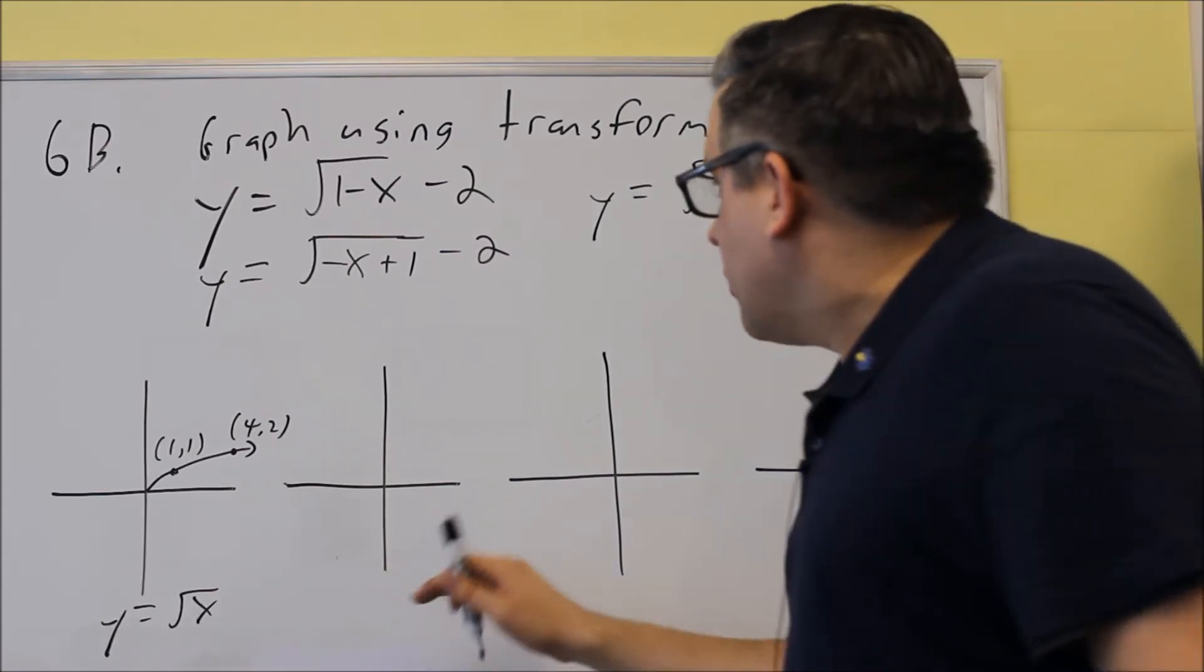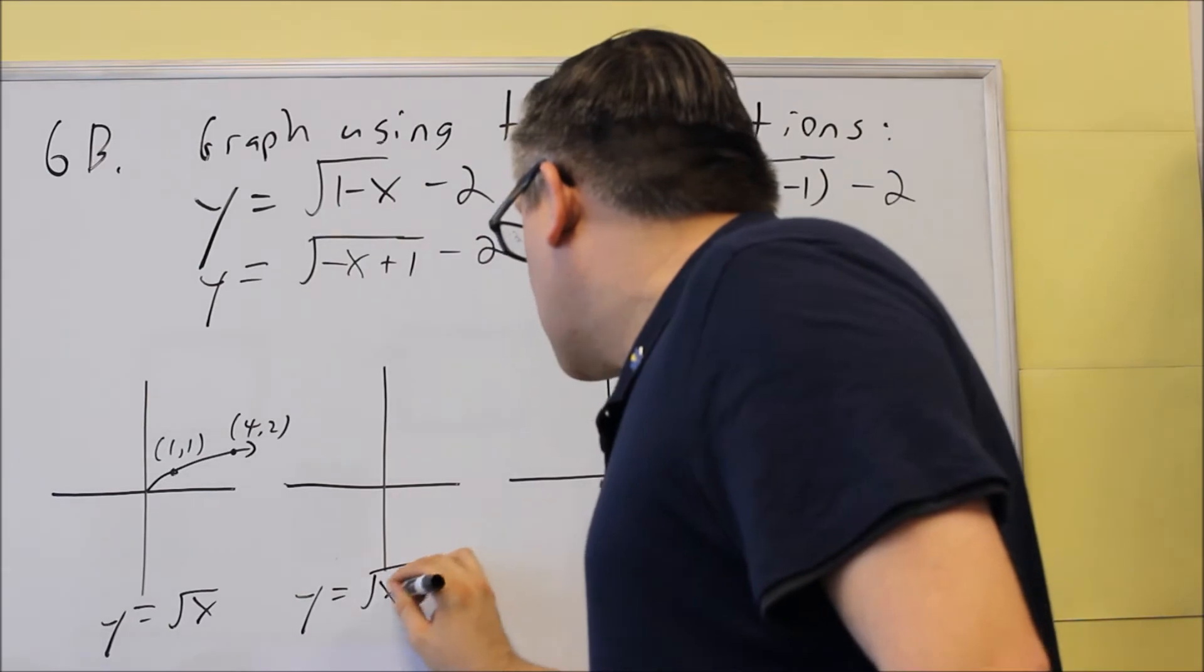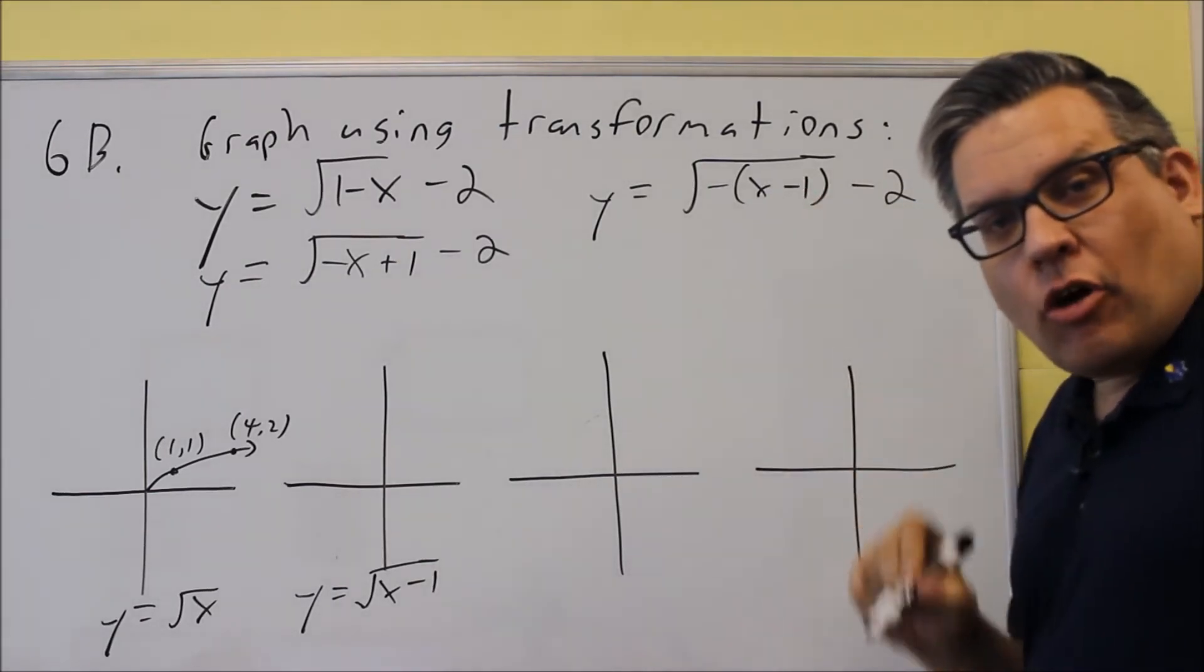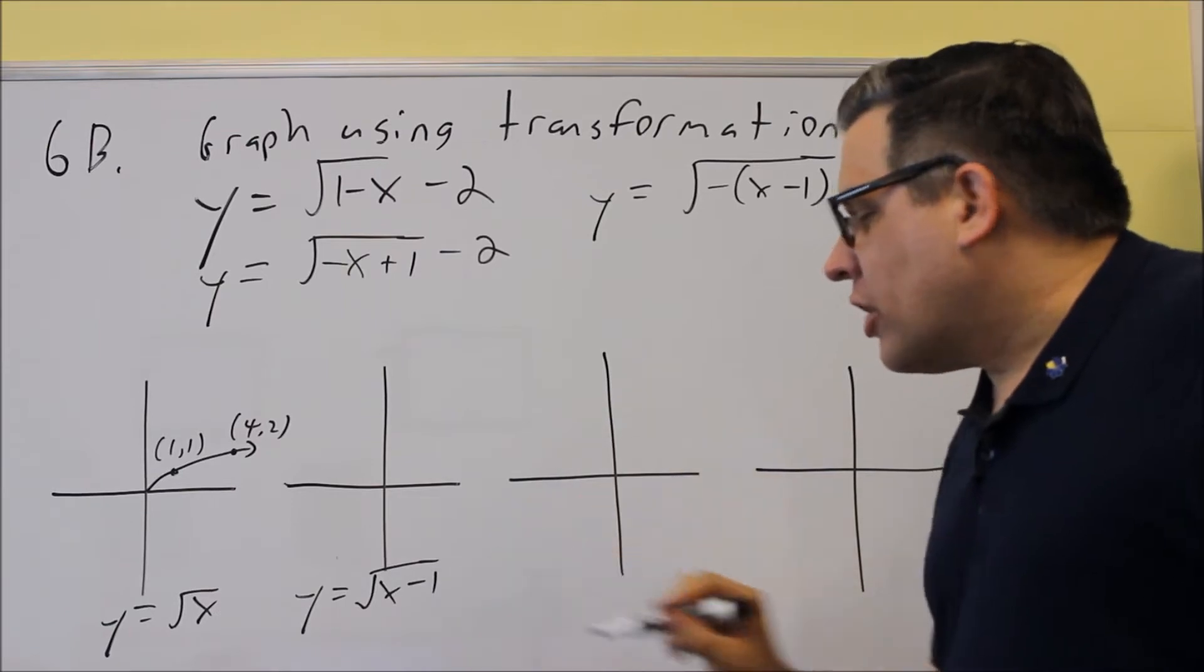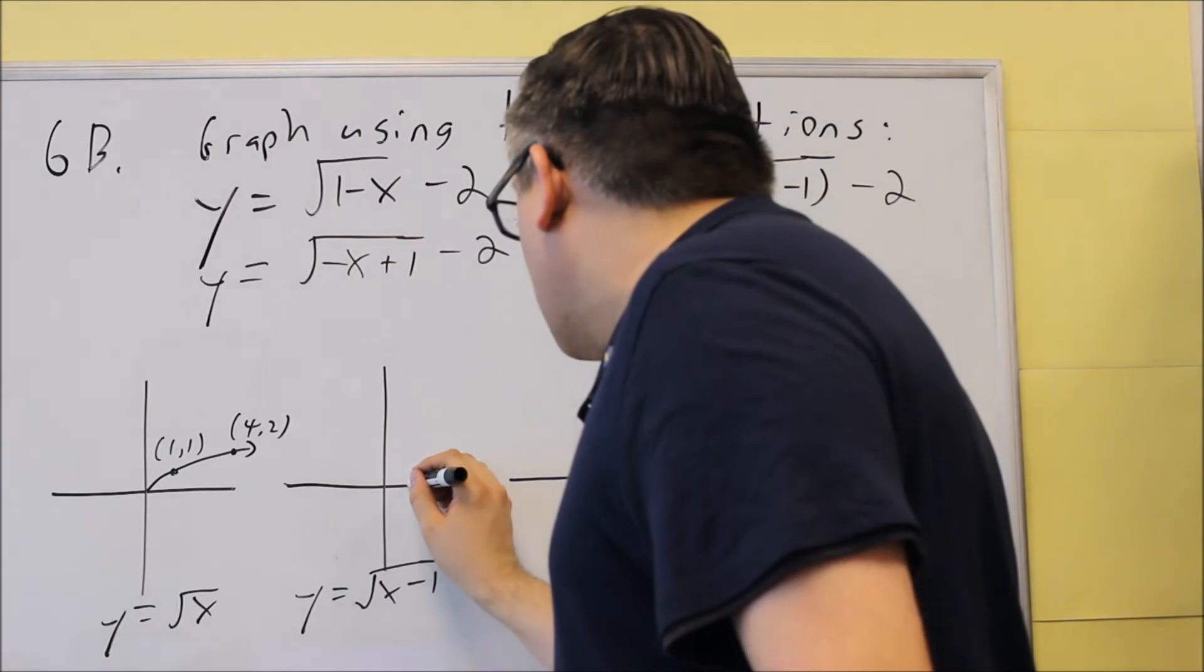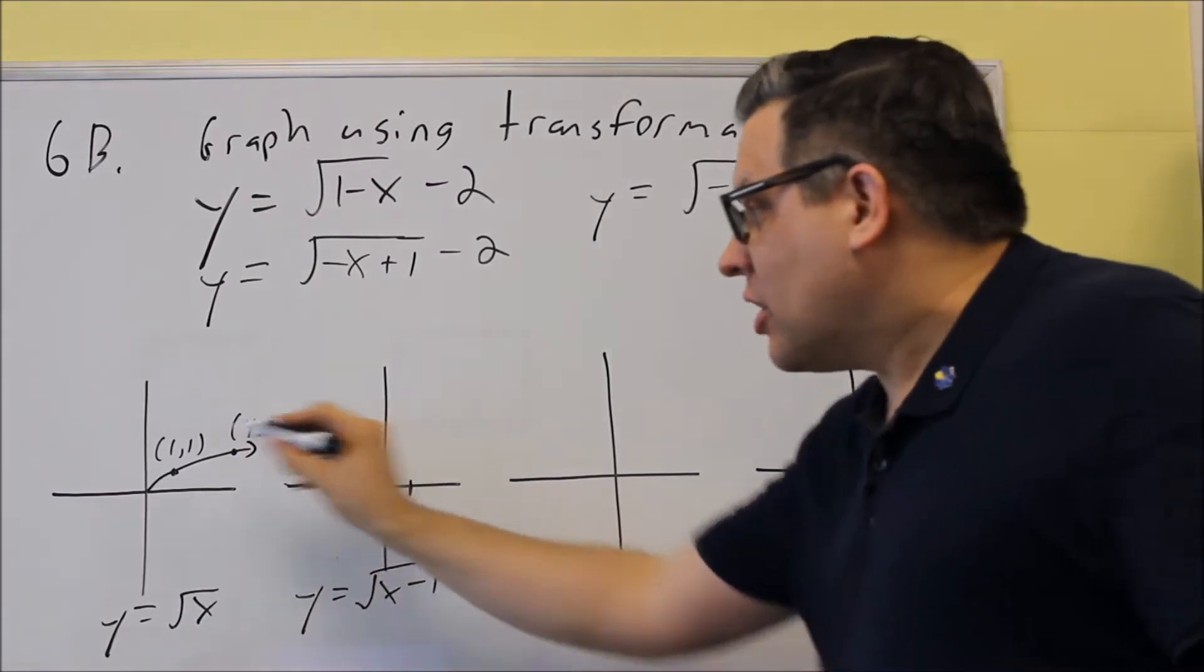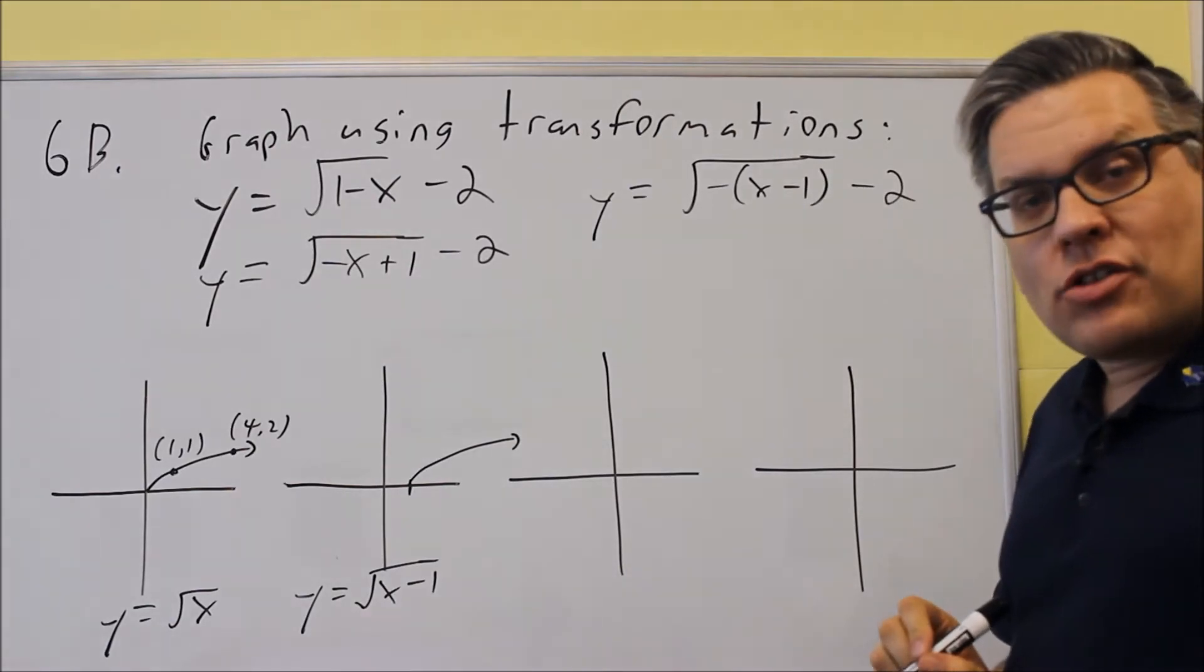So the first thing that we're going to do here is we're going to move the graph one place over to the right. So we're going to do the square root of x minus 1, just that part on the inside. Again you always move it opposite direction of the sign that you see right there. So instead of negative, you're going to move it 1 to the right. So now my graph is going to start here. Instead, it's going to start at (1,0) instead of (0,0).